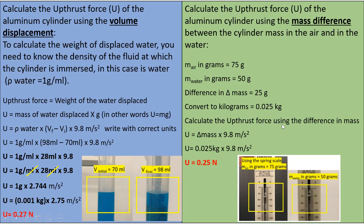Now we are going to calculate the upthrust force using the difference in mass. So the upthrust force here is mass times g, m times g. The difference in mass is 0.025 kilos times the acceleration of gravity, which is 9.8 m per second squared. So when you multiply those numbers, the upthrust force is equal to approximately 0.25 newtons.